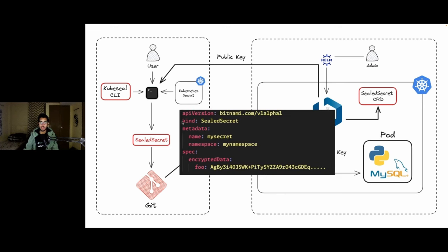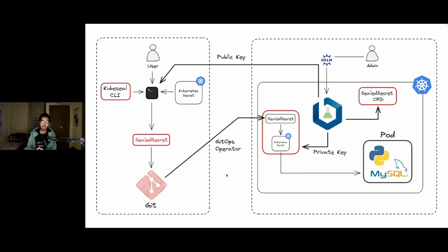You use the public key and your native Kubernetes secret to convert them into a sealed secrets file. The kubeseal CLI encrypts the Kubernetes secret into a new sealed secrets resource — it's a kind of sealed secret custom resource with encrypted data, which is way more secure than a native Kubernetes secrets file. For decryption, the GitOps operator takes the sealed secrets file and converts it into the native Kubernetes secret using the private key generated by the operator. The sealed secret is converted to the native Kubernetes secret and fed to the containers running in a pod.